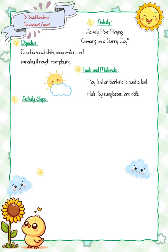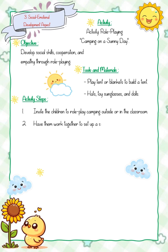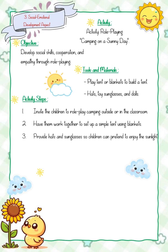Activity steps: one, invite the children to role-play camping outside or in the classroom. Two, have them work together to set up a simple tent using blankets. Three, provide hats and sunglasses so children can pretend to enjoy the sunlight.